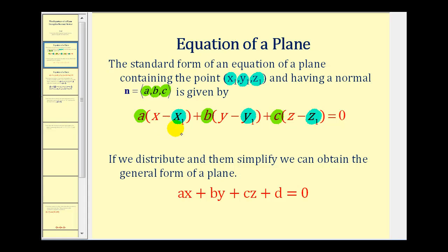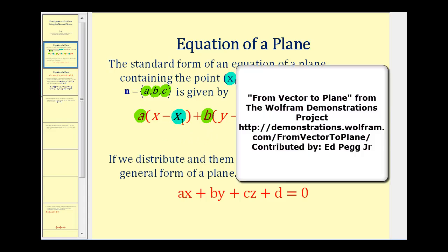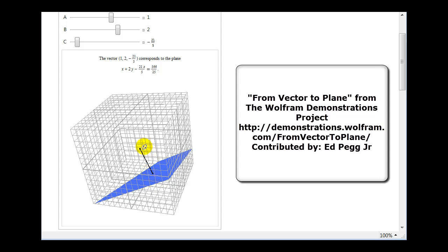Once we have this equation in standard form, we can distribute and combine like terms to come up with what's called the general form of a plane. Here's the graph of a plane and the normal vector in black. If we pick any two points in the plane to form another vector, it would still have to be perpendicular or orthogonal to the normal vector. So if we find the dot product of the normal vector and any vector in this plane, it would have to equal zero because they would be orthogonal. This is the idea where the equation of the plane comes from.